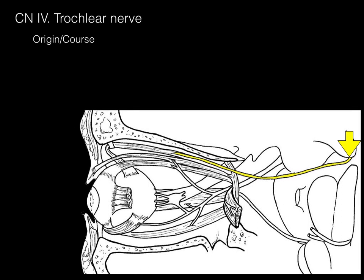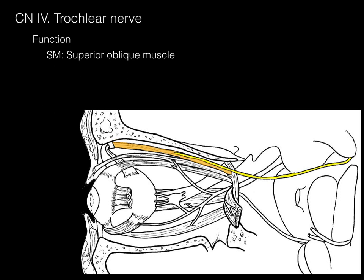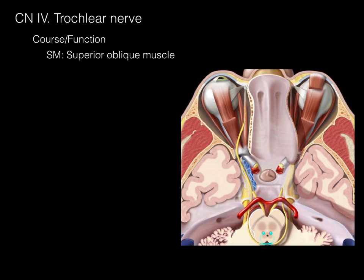Now let's talk about the trochlear nerve, cranial nerve 4. It also arises from the midbrain — actually from the back of the midbrain — and courses to the superior orbital fissure, then through it to innervate one muscle: the superior oblique. It's called the superior oblique because it courses up, wraps around a pulley called the trochlea — which is where the nerve's name comes from — and then runs at an oblique angle over the top of the eye. The trochlear nerve courses from the midbrain through the cavernous sinus to the superior orbital fissure, and innervates only the superior oblique.